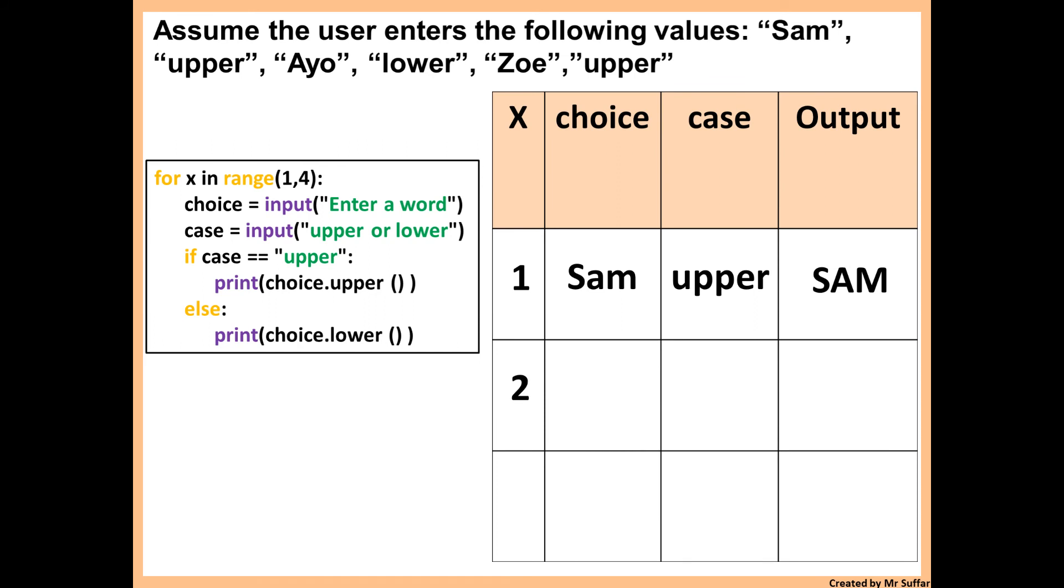Then we go back to the start. x will increase by 1. So the next value is Ayo. Because that's the choice. And then the next case is lower. And so it will say if case is equal to upper, no, that's false, because case is not upper, it's lower. So we go to the else, it says print choice.lower. So choice.lower will print the value of choice, but in lowercase. So Ayo will display it in lowercase.